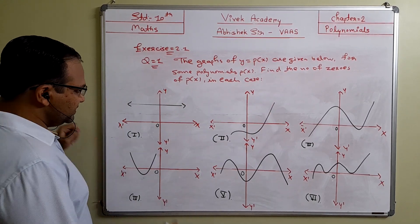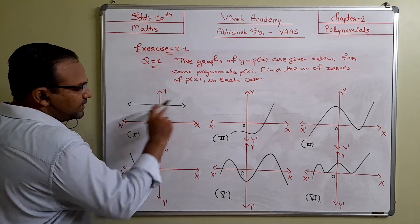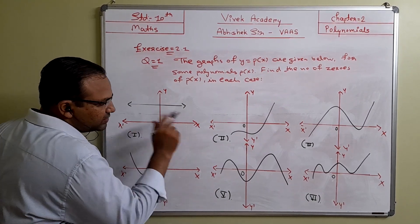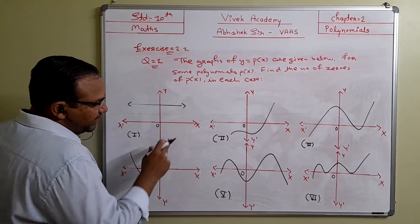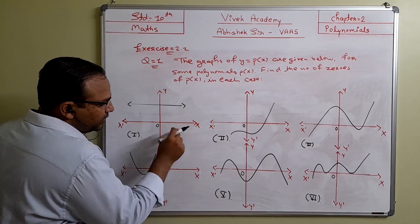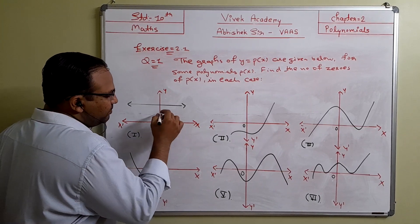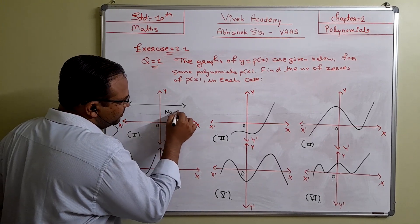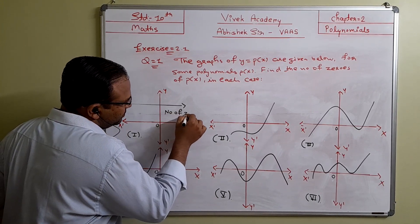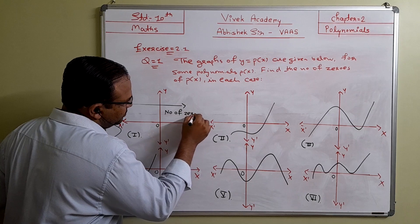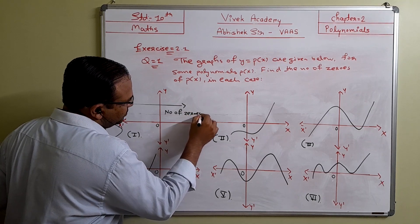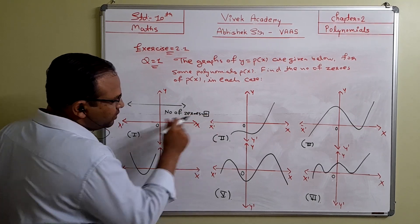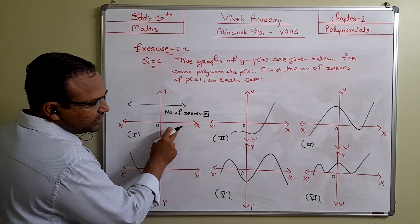Question number 1: a straight line graph is given. It is not touching at any point on the x-axis, so the number of zeros is 0.